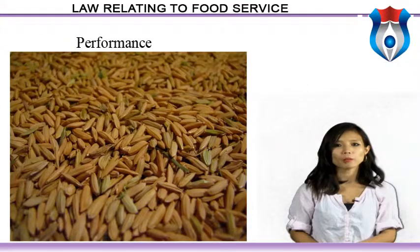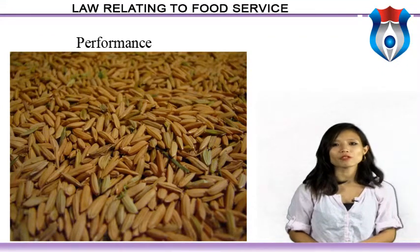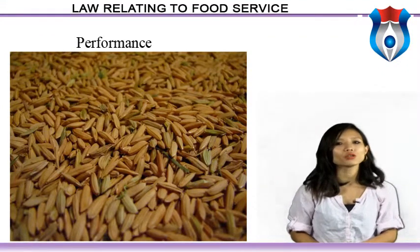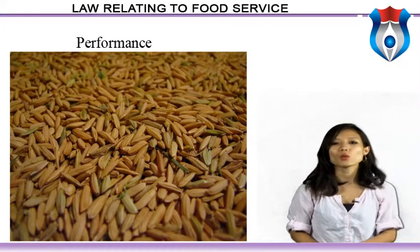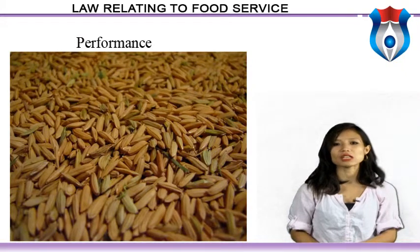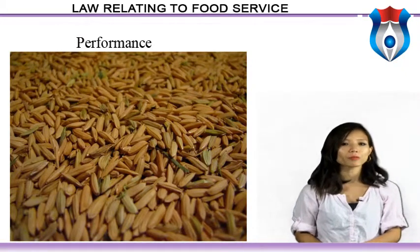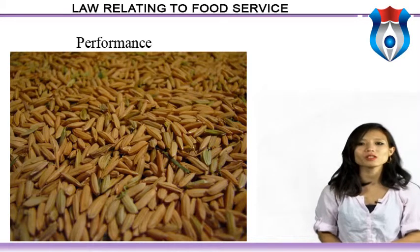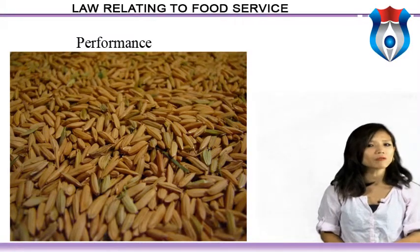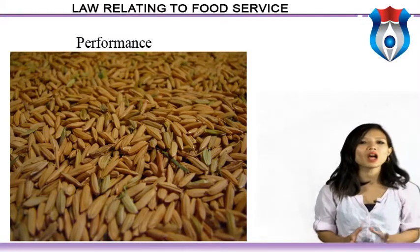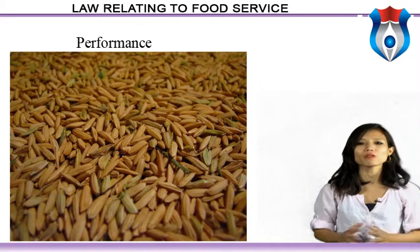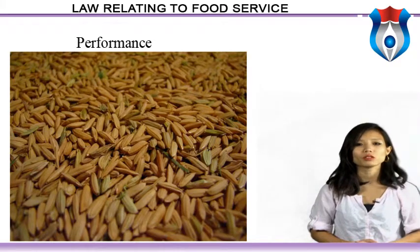Attainment of self-sufficiency in food grains at the national level is one of India's major achievements in the post-independence period. After remaining a food-deficit country for about two decades after independence, India became largely self-sufficient in food grain production at the macro level.